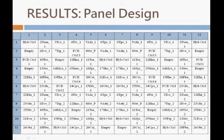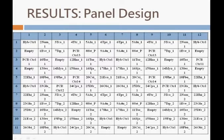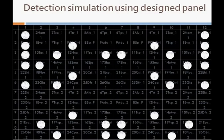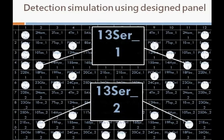A panel based on the validated probes and necessary controls — including negative controls, PCR controls, and hybridization controls — was designed. Here is an example of how a positive detection of a specific helminth will appear. Each corresponding light spot represents one probe used in the panel. By comparing this image with the panel that was designed, the specific helminths present in the sample will be revealed.